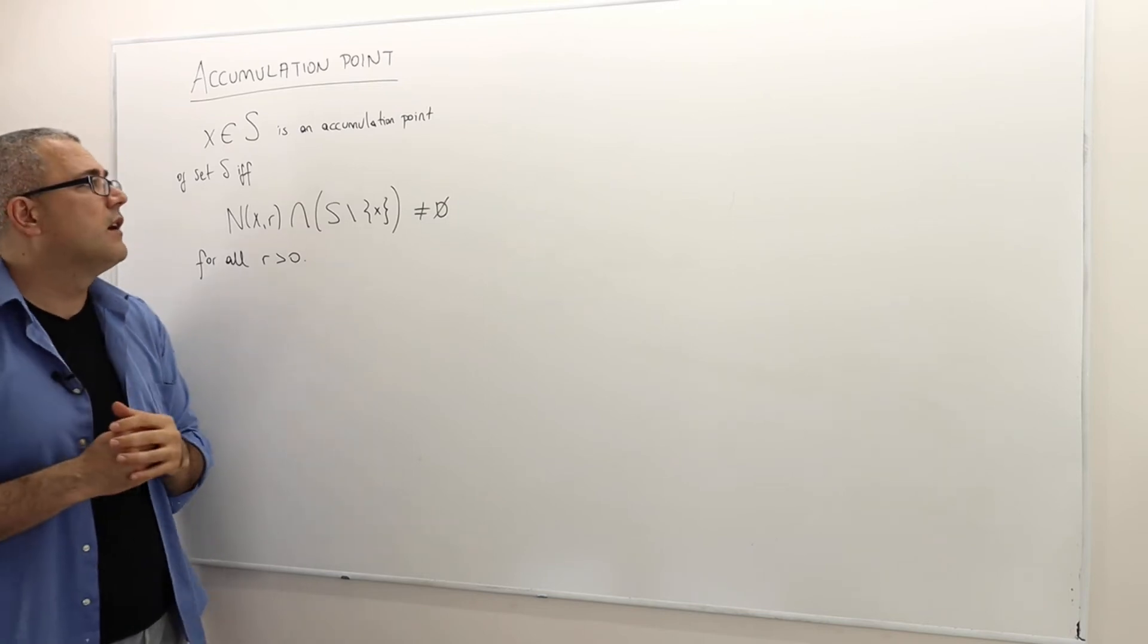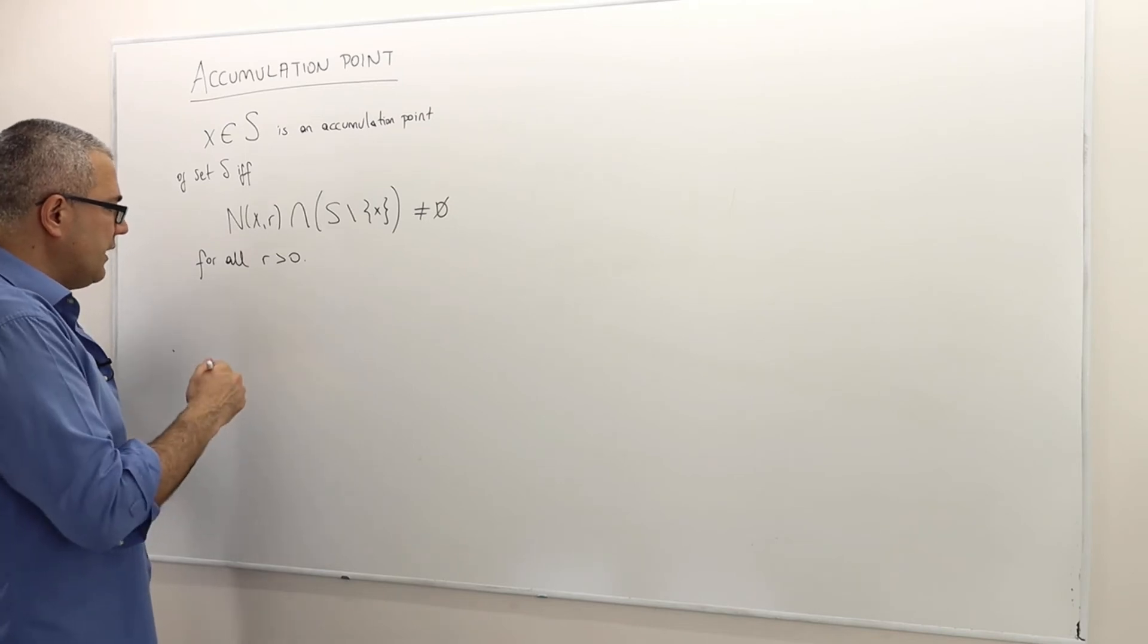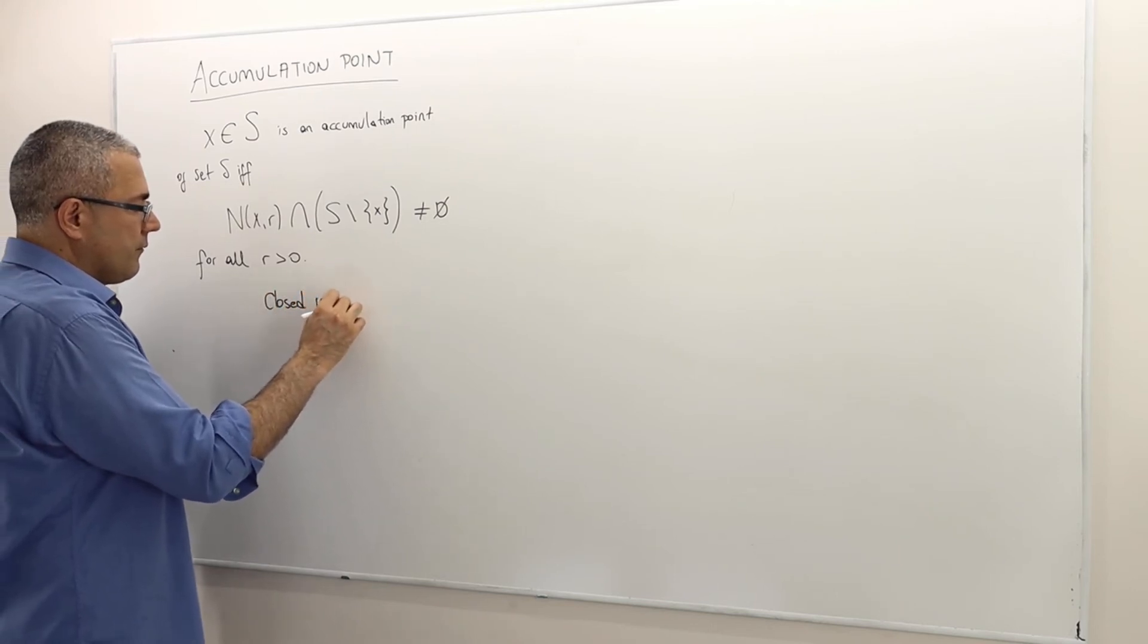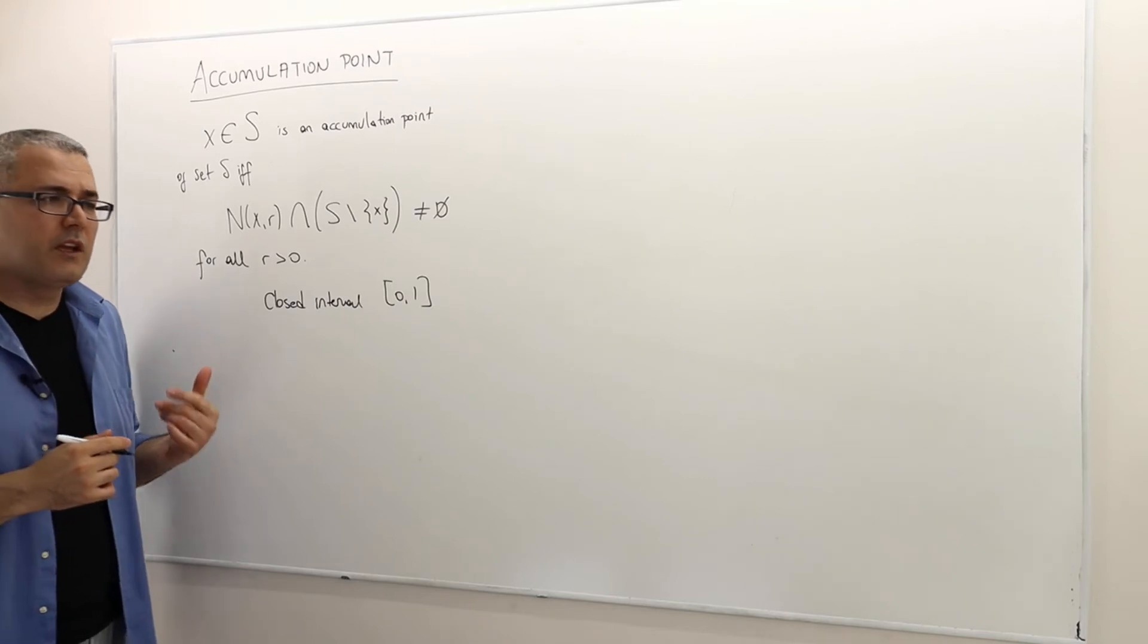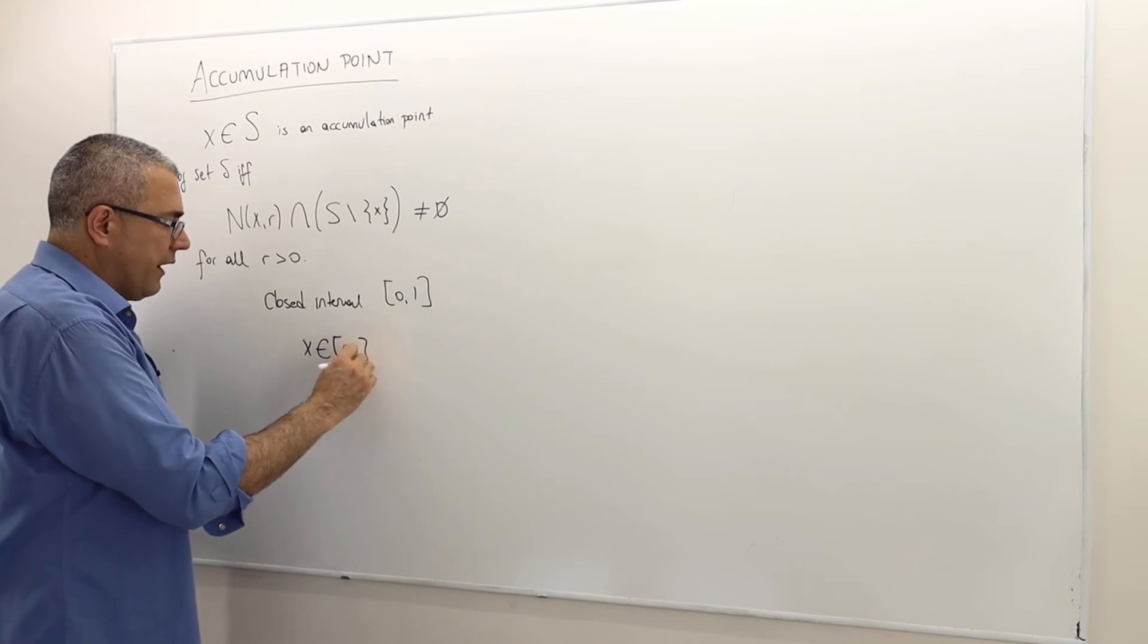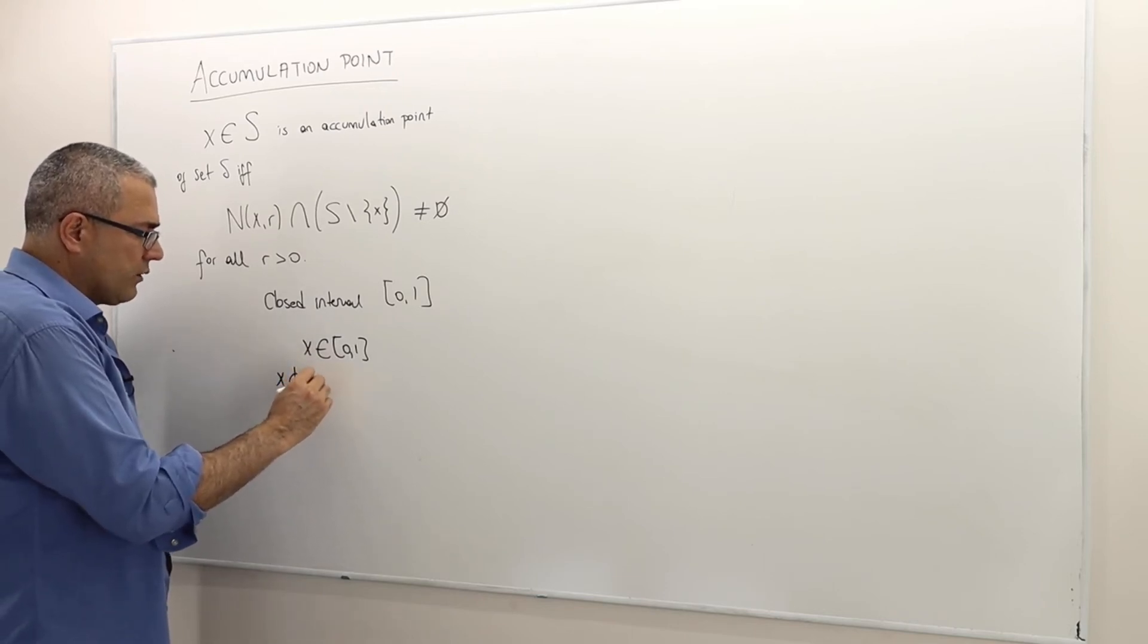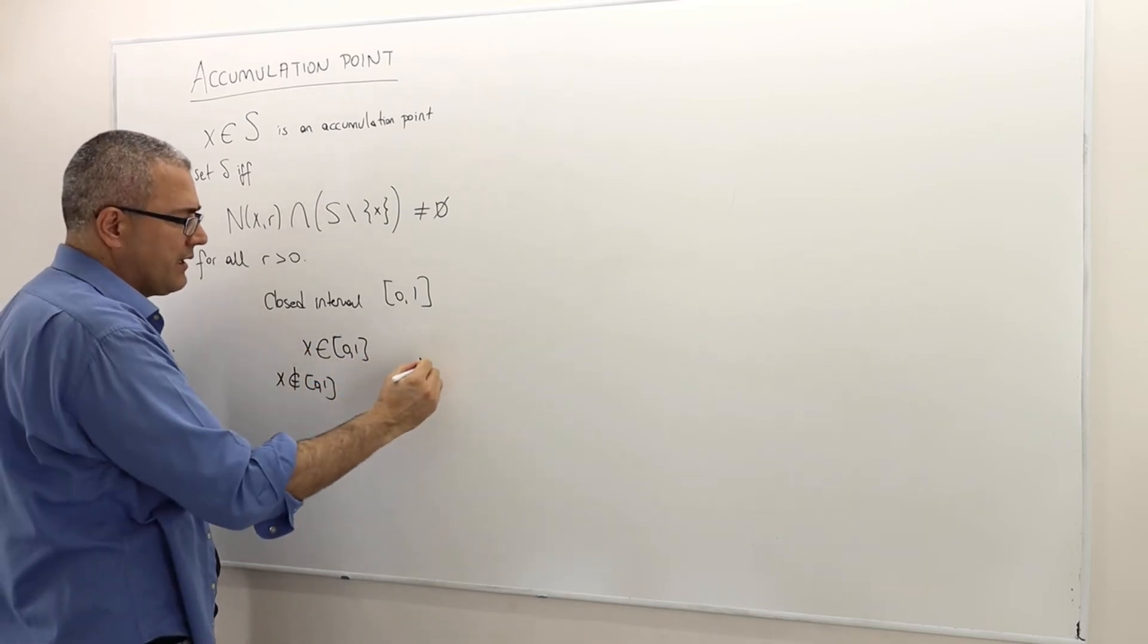If we need to give an example, let's consider the set, a closed interval [0, 1]. So what is an accumulation point of this set? Any point X in [0, 1] is, in fact, an accumulation point. We will talk about it later. But let's consider some X which is not element of [0, 1]. So here my set S is [0, 1] interval. But let's take any other element. For example, X equals 2.